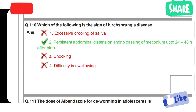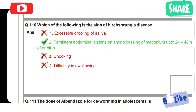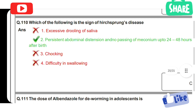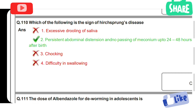Which of the following is a sign of Hirschsprung's disease? Option 1: Excessive drooling of saliva. Option 2: Persistent abdominal distension and no passing of meconium up to 24 to 48 hours after birth. Option 2 is the correct answer — persistent abdominal distension and no passing of meconium up to 24 to 48 hours after birth.